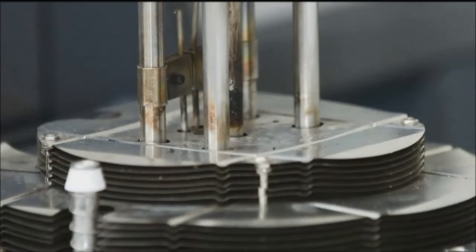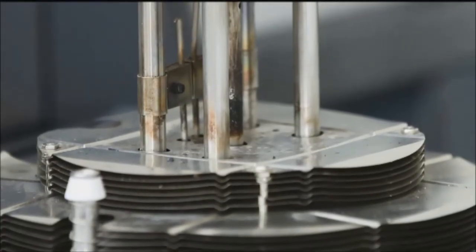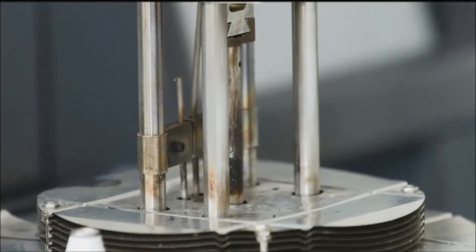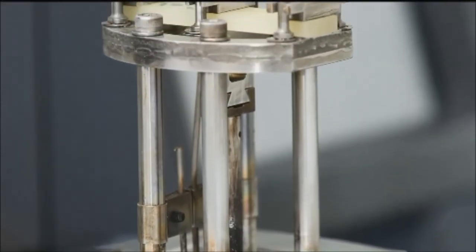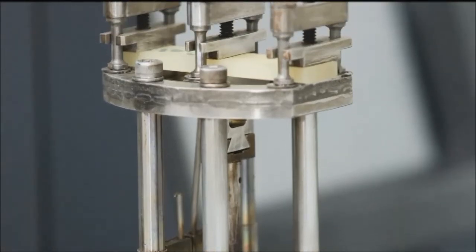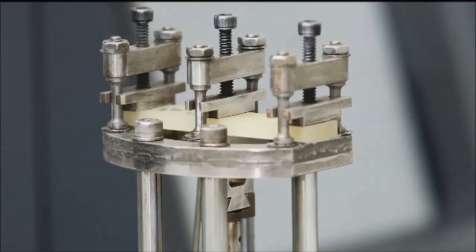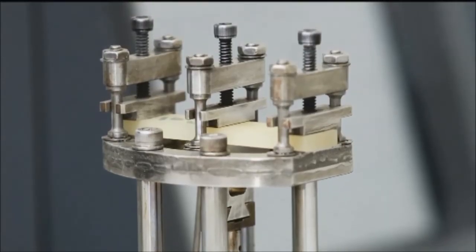The DMA applies force sinusoidally at several frequencies over a temperature range. As the sample deforms, displacement is automatically measured. The magnitude of the applied stress and the resultant strain are used to calculate the stiffness of the material under stress.